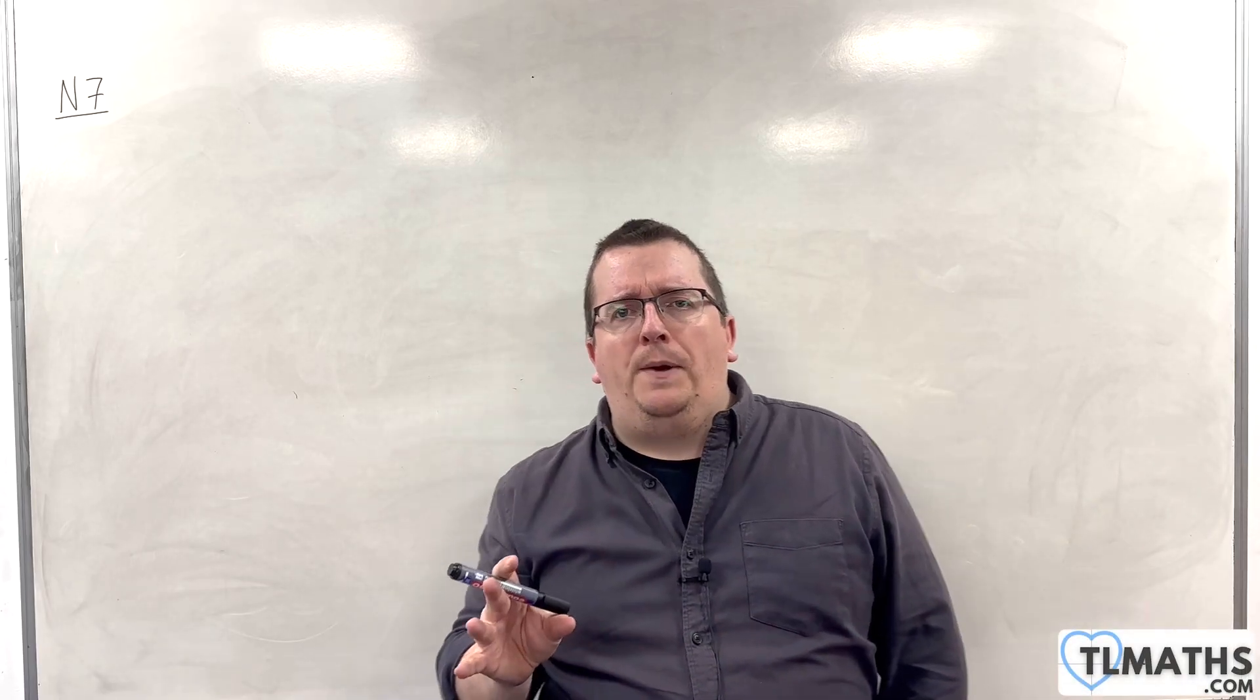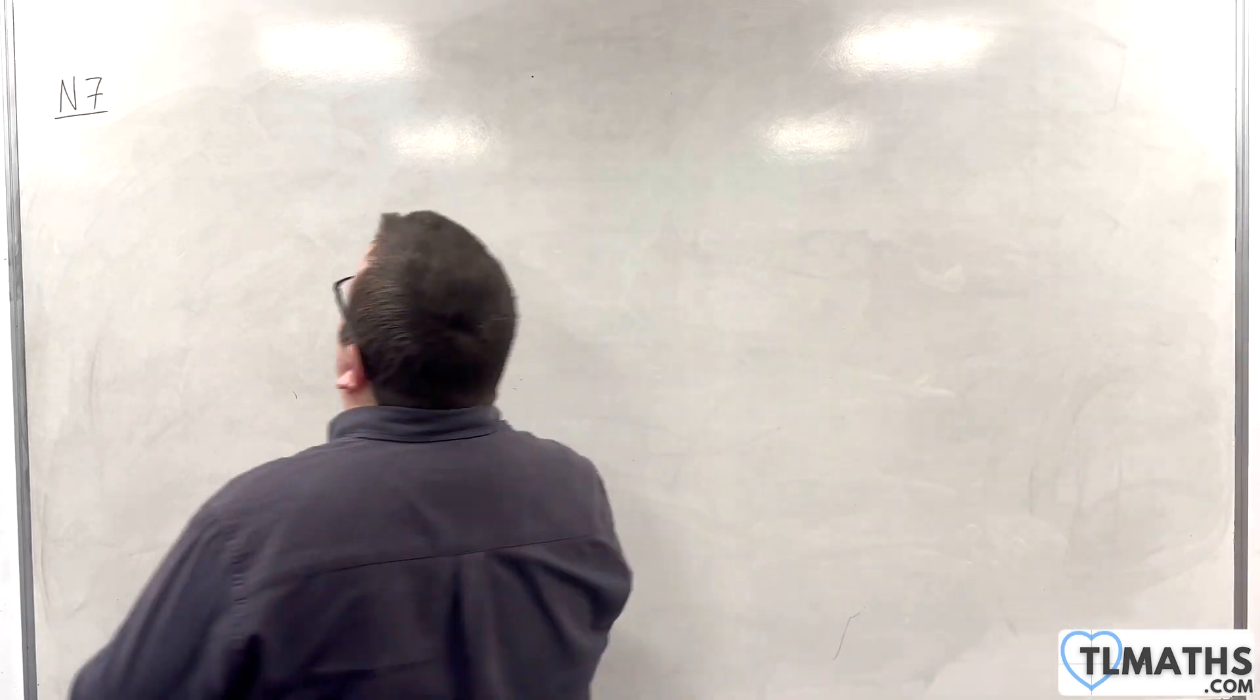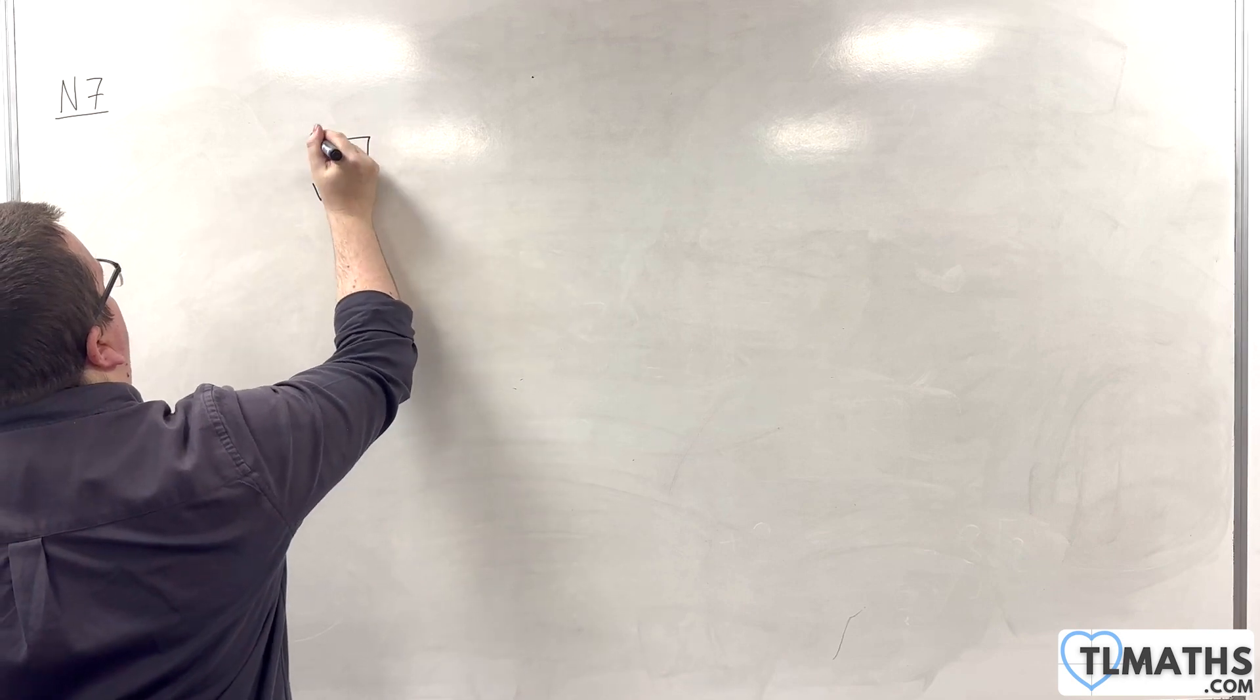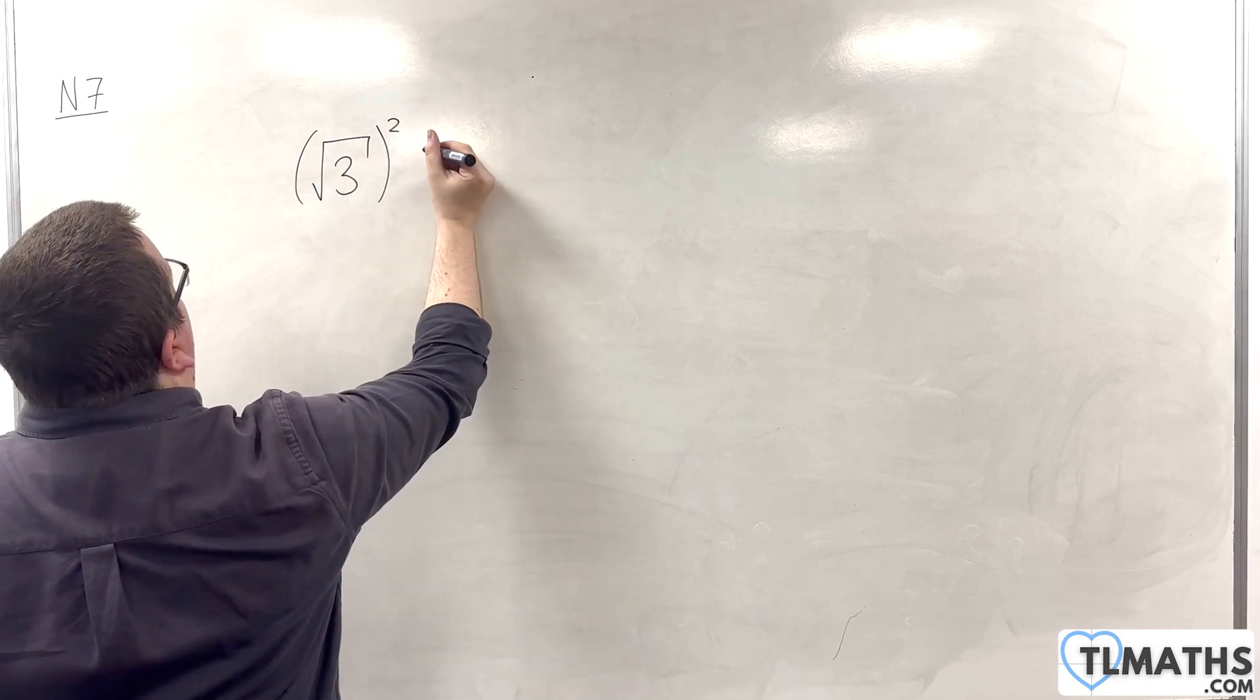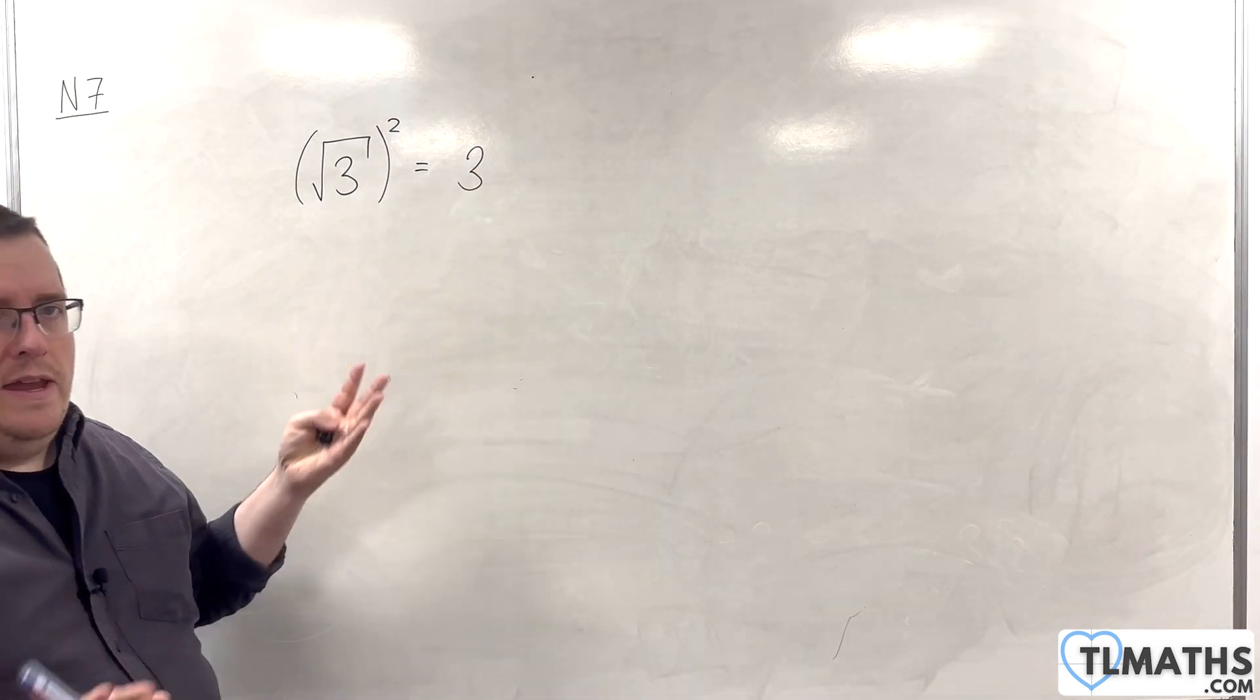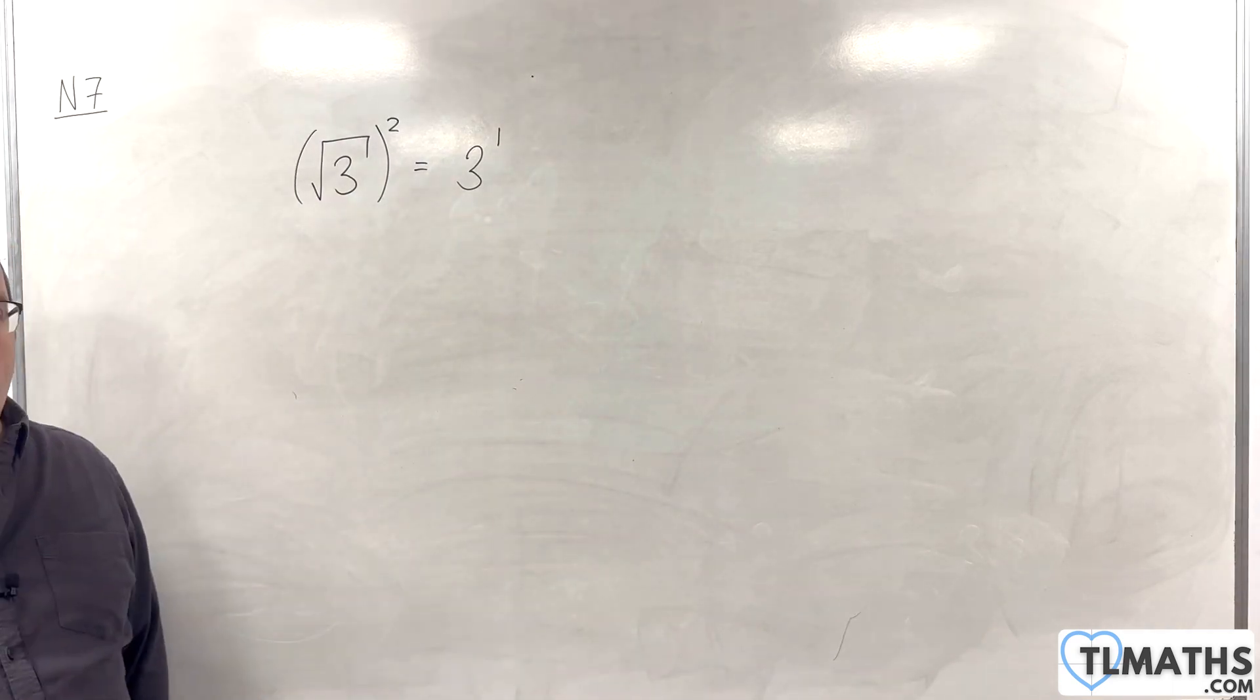I want to start this video off by considering one of our previous results that said that if we have the square root of 3 and I square that, I get 3. Now, the result here, 3, is of course 3 to the power of 1. That's the same thing as 3.